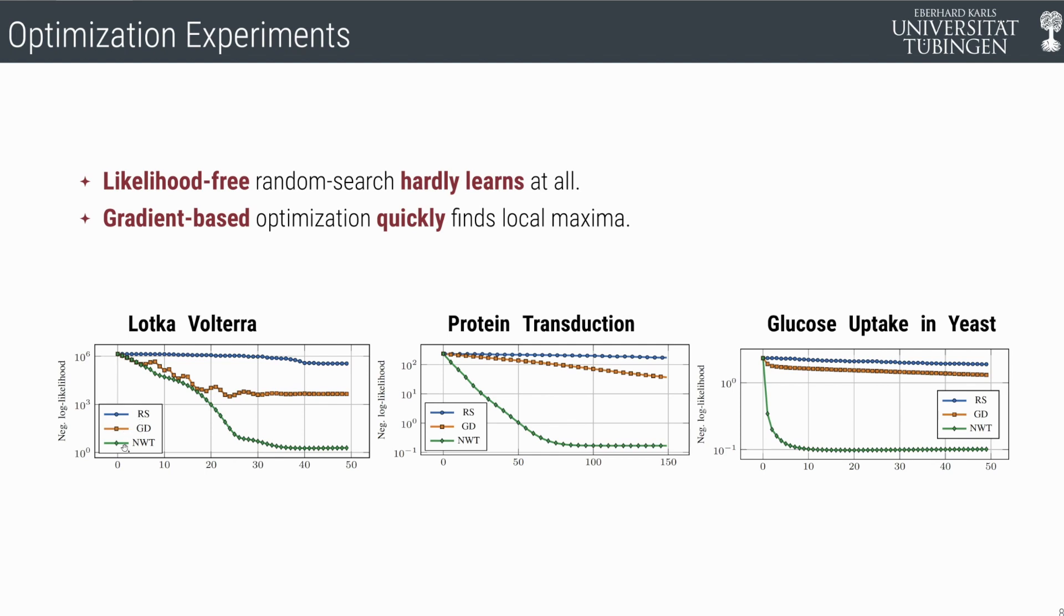The orange and green line are gradient descent and Newton's methods. So our new methods. You see that on all three systems, the likelihood-free version doesn't learn at all, which is hardly surprising because if you don't have a gradient, you usually don't do maximum likelihood optimization.